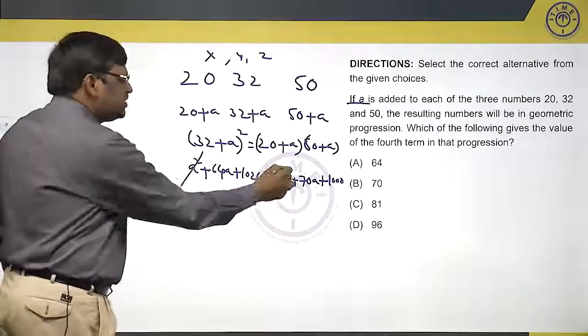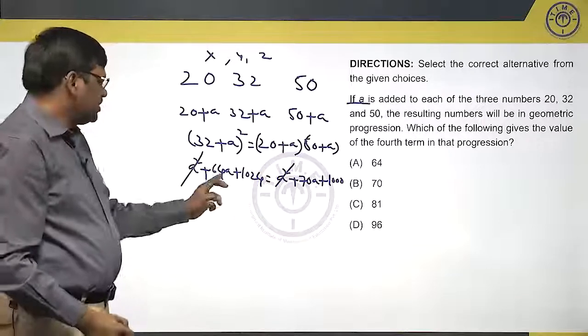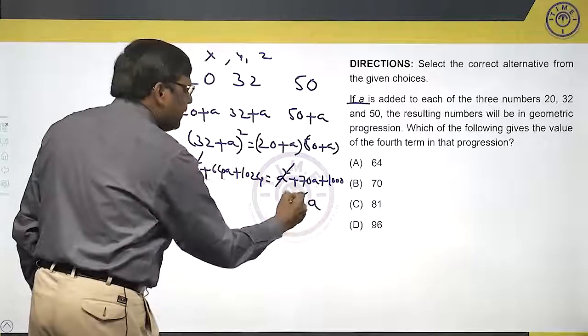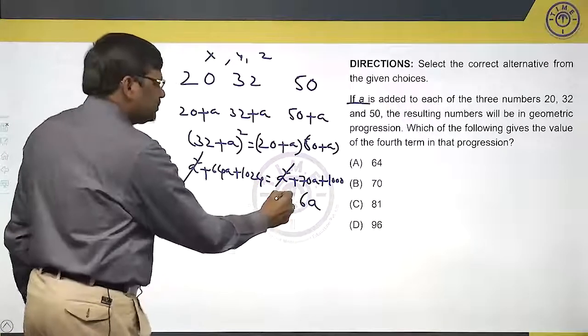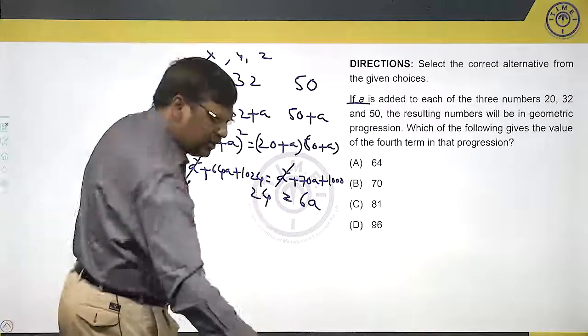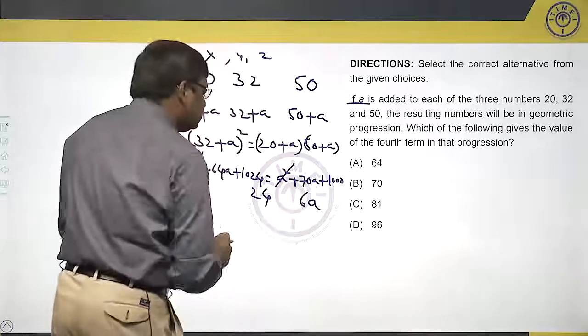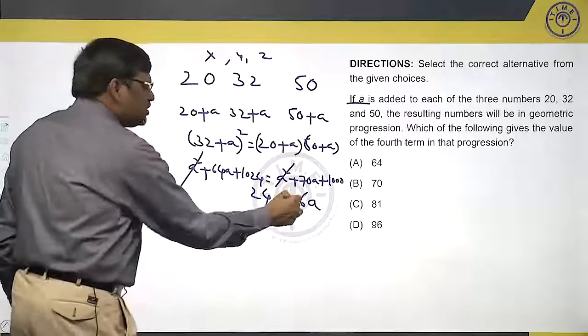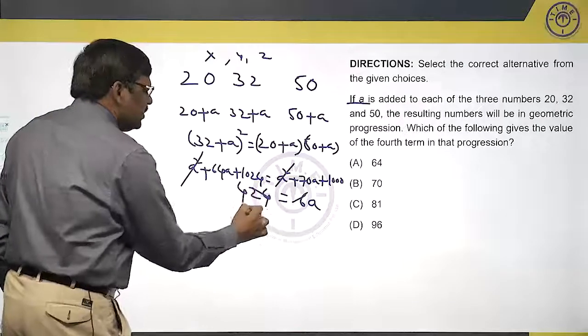Now, A square both sides will get cancelled. 64A goes other side, 70 minus 64, 6A equals to 1000 comes to this side, 24. If 6A is 24, A is 4.